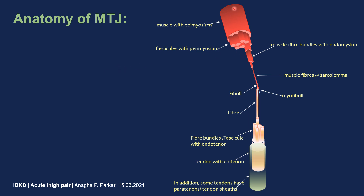The muscle consists of muscles with epimysium, then broken down into fascicles with perimysium, then we have the muscle fibers with endomysium, and the last bit is the muscle fiber with sarcolemma, then the myofibril. For the tendons, it's usually a tendon with epitenon, then endotenon, then fibers, then myofibril. Some tendons also have tendon sheaths — for instance, the biceps or the flexor tendons of the hand — to keep them in place during function.